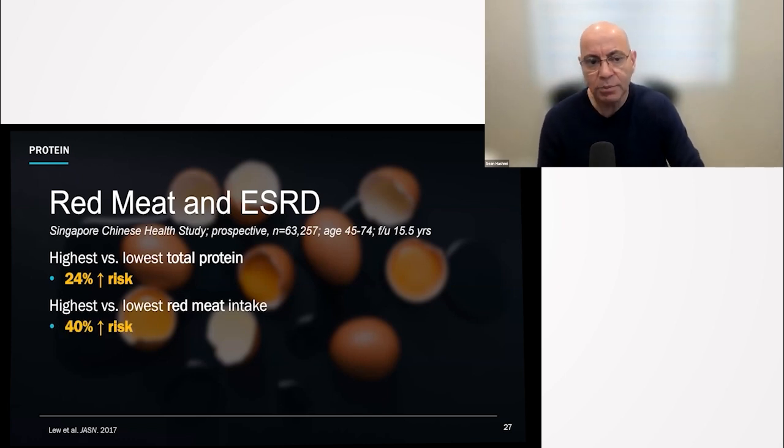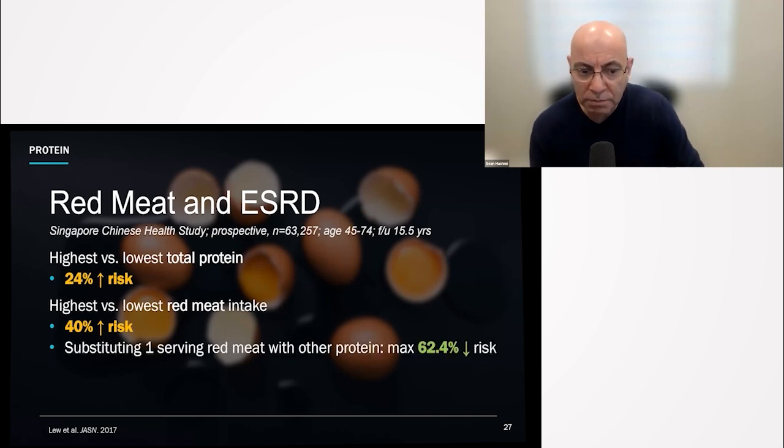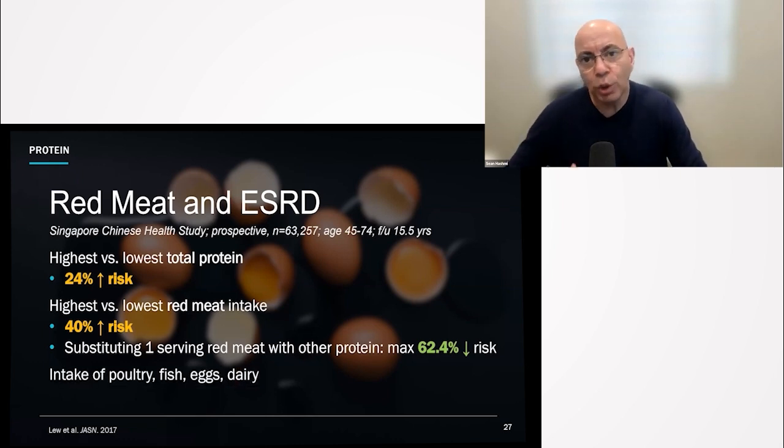Same exact thing when it comes to red meat. Total protein makes a difference. But what we find is if you start to substitute red meat with other things, what could be other things? Tofu. What you'll find is you actually lower the risk substantially of progressing to end-stage renal disease. So this is why it matters so much.